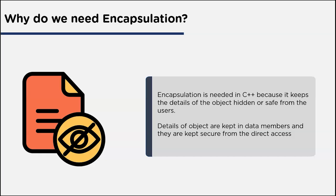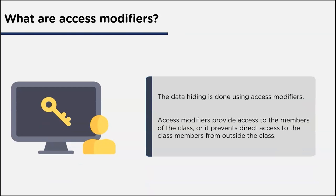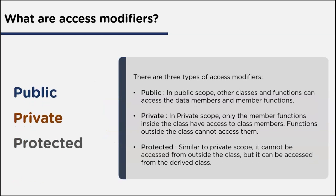Data hiding is done with the help of access modifiers. Access modifiers help in the data-hiding part — they grant access to the members of a class or prevent direct access to class members from outside the class. There are generally three types of access modifiers: public, private, and protected.